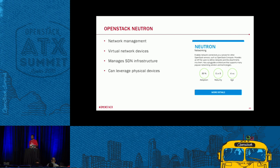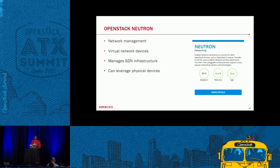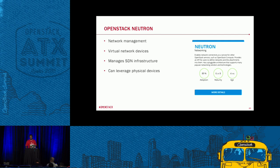Neutron offers network management — it provides all your virtual switching, virtual routing, floating IP addresses, private IP addresses, L2, L3 stuff, and DHCP addresses. All that kind of stuff is inside Neutron. It manages the SDN infrastructure. You can also leverage physical devices — companies like F5 have plugins you can install into Neutron that allow you to offload some networking throughput to those actual physical devices instead of keeping everything virtualized.